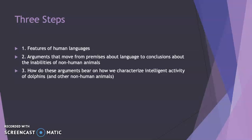First we're going to look at what are the features of human languages that we might say animals don't have. Then we're going to look at the arguments that philosophers have made that move from premises about language to conclusions about the inabilities of non-human animals. Then we're going to bring those into question so that we can characterize the intelligent activity of dolphins and non-human animals and think about what that might mean for human capacities for reasons. These three steps will take place over the next two chapters, examining language in relationship to non-human animals and what philosophers may have left out that mischaracterizes the human animal.